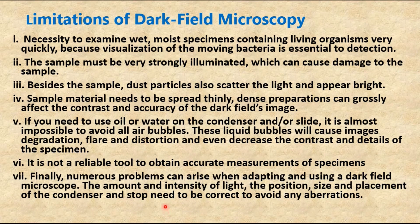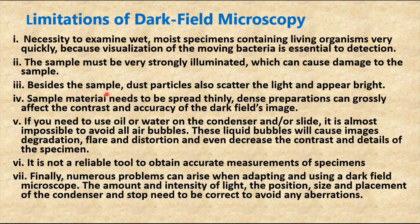The limitations of the dark field microscope include: the necessity to examine wet, moist specimens containing live organisms very quickly, because visualization of moving bacteria is essential for detection. The sample must be very strongly illuminated, which can damage the sample. Dust particles also scatter light and appear bright, causing distortion. The sample material needs to be spread thinly, as dense preparations can grossly affect contrast and accuracy.